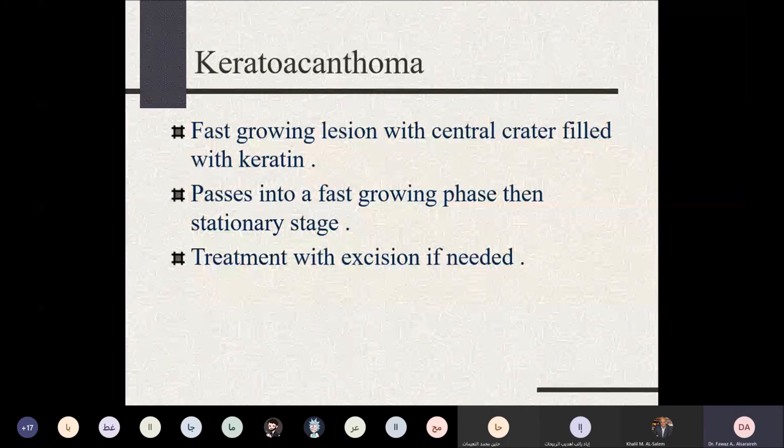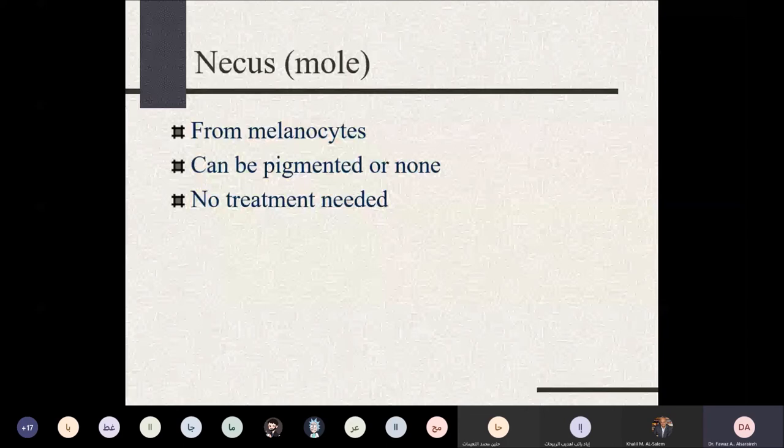Nevi or moles arise from melanocytes and can be considered freckles, intradermal, or compound nevi — the same as nevi in skin lesions elsewhere on the body. Malignant tumors include basal cell carcinoma, squamous cell carcinoma, and malignant melanoma, which are similar to skin tumors.